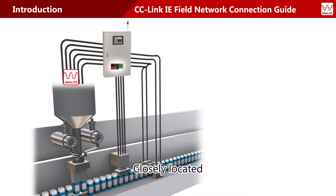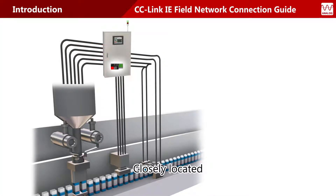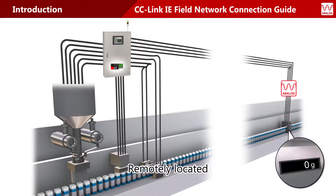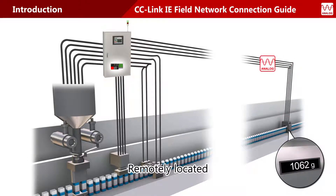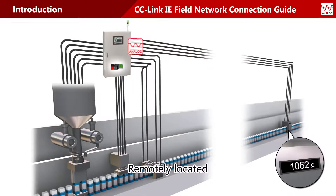A controlled device can be directly wired to the analog input and output module if it is closely located. But it is troublesome to run multiple analog input and output cables to a controlled device in a remote location.